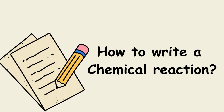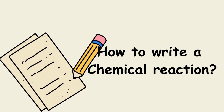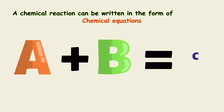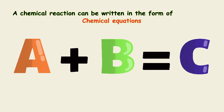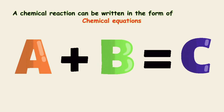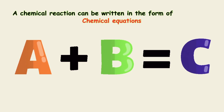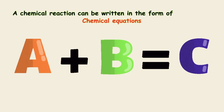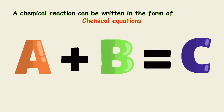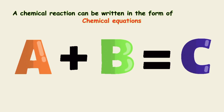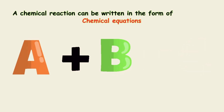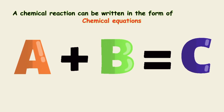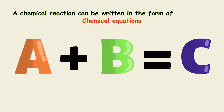Next is how to write a chemical reaction. A chemical reaction can be written in the form of chemical equations. A chemical equation is the symbolic representation of chemical reactions where reactants and products are expressed in terms of their respective chemical formulae.